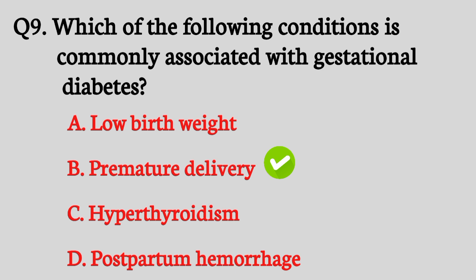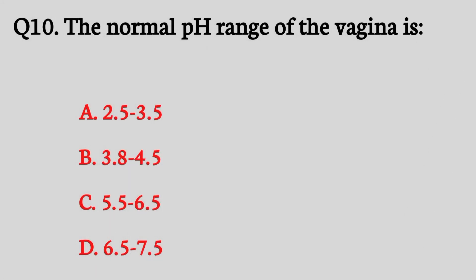Question number ten. The normal pH range of the vagina is? The right answer is option B: 3.8 to 4.5.